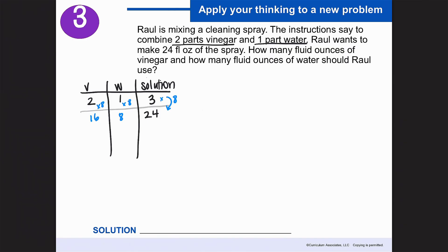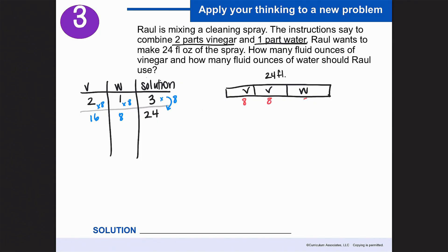There's also another way to do this with a tape diagram. We can represent the 24 fluid ounces with three parts: two parts vinegar and one part water. Since we've divided it into 3 sections, 24 divided by 3 is 8, so each section is worth 8. That means 8 plus 8 is 16 for vinegar, and 8 for water.